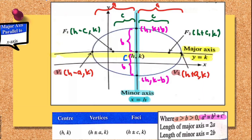The length of the major axis is 2a. This distance here is a, and this distance here is also a, so the total length of the major axis is a plus a, which is 2a. The length of the minor axis is 2b. This part is b and another part is also b, so b plus b gives a total of 2b. That's all on the graph of an ellipse with major axis parallel to the x-axis.